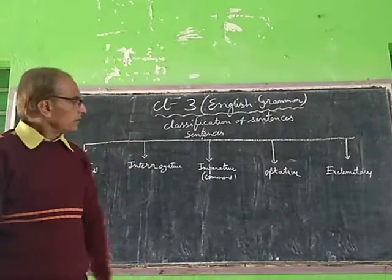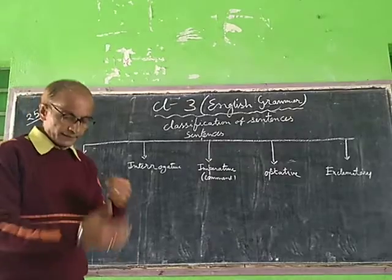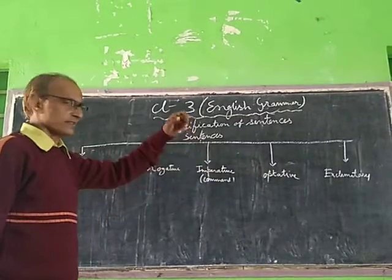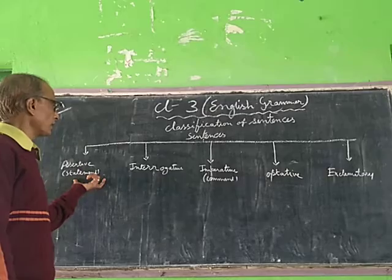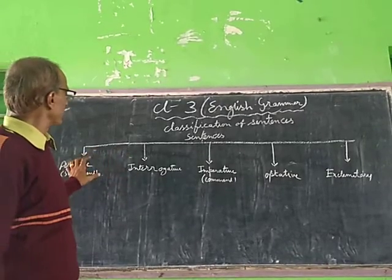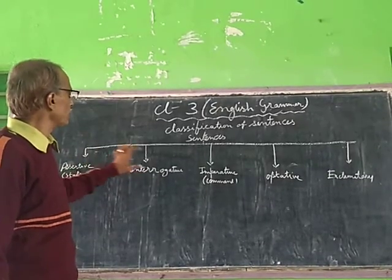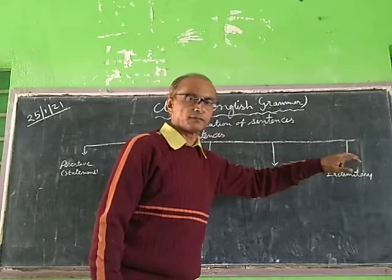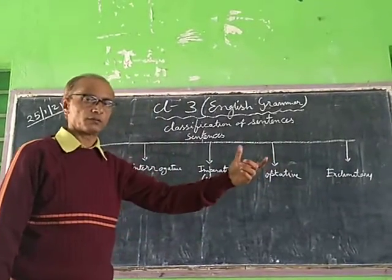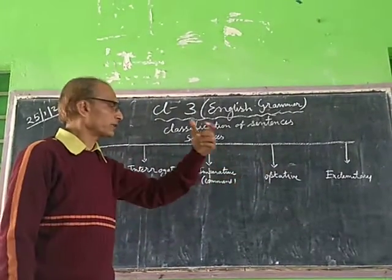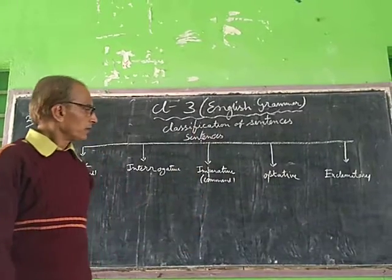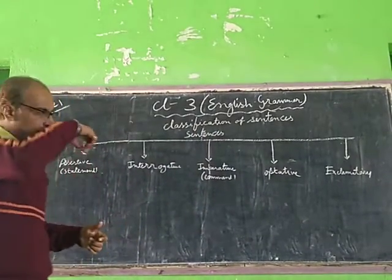Okay, now let's see. Sentences are broadly classified into 1, 2, 3, 4, 5 — five categories, or five groups. Broadly classified.